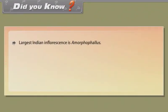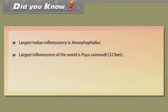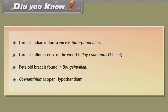Did you know: the largest Indian inflorescence is Amorphophallus. The largest inflorescence in the world is Puya raimondii at 32 feet. A petaloid bract is found in Bougainvillea. Synanthium is an open hypanthodium.